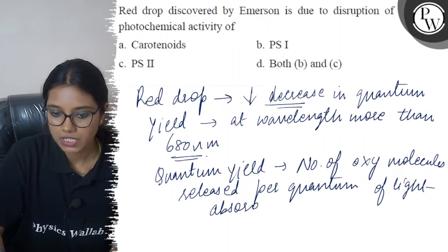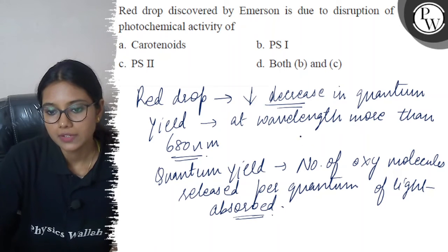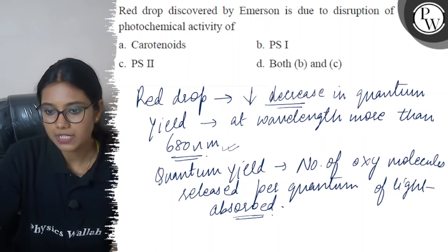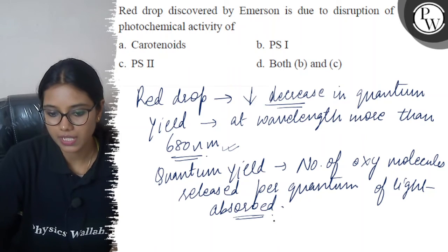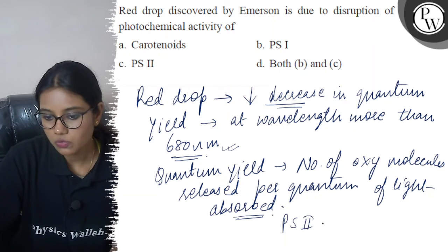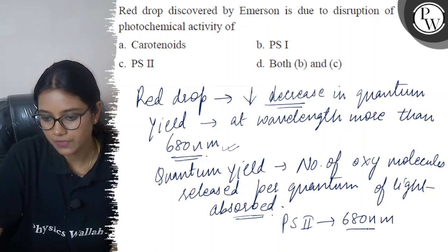So, there is a sharp decrease in quantum yield at 680 nanometer. Since PS2 works at 680 nanometer wavelength,